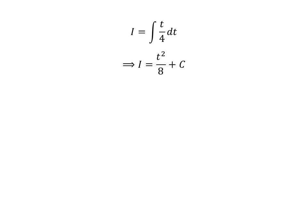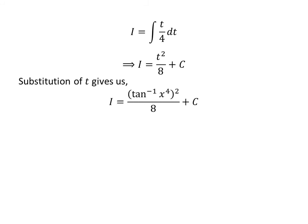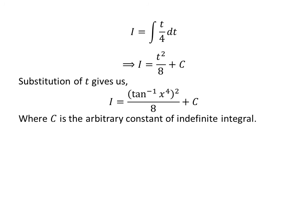Capital C is the arbitrary constant of the indefinite integral — never forget to add this constant. Let us substitute t in terms of x: since we had assumed t is equal to arctangent of x raised to the power of 4, we get i is equal to the square of arctangent of x raised to the power of 4, upon 8, plus capital C.